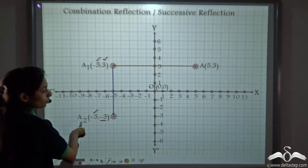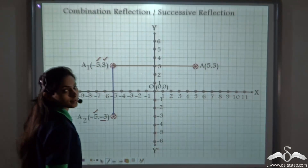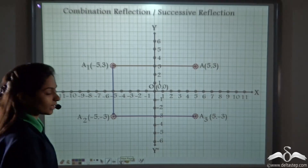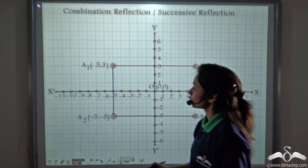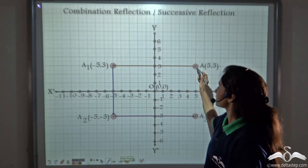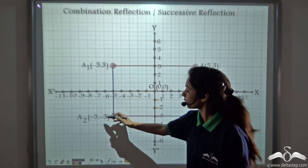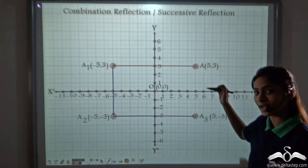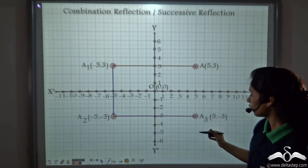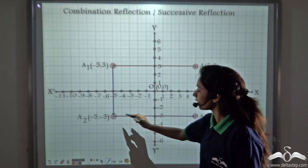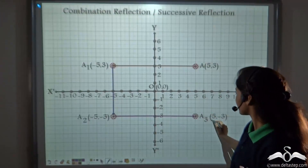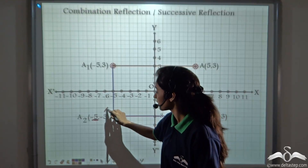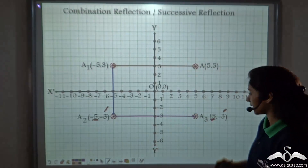We reflect A2 back on the y-axis and we get the image as A3. So you can see we are reflecting this candy once, then twice, then three times — we are having multiple reflections of this candy. Again, when reflecting on the y-axis, the sign of the x coordinate is changing whereas the y coordinate remains the same.